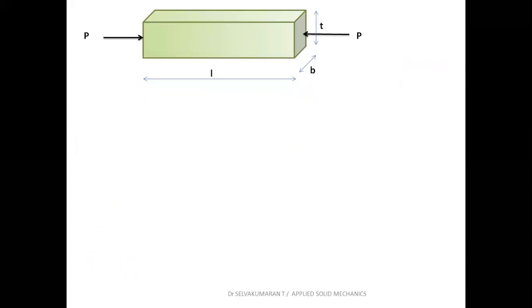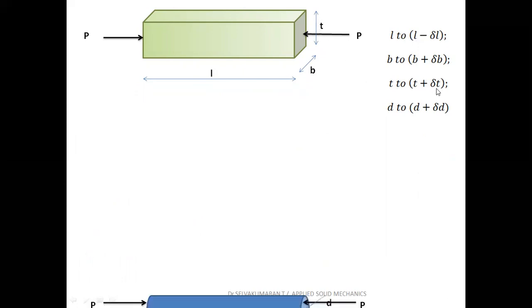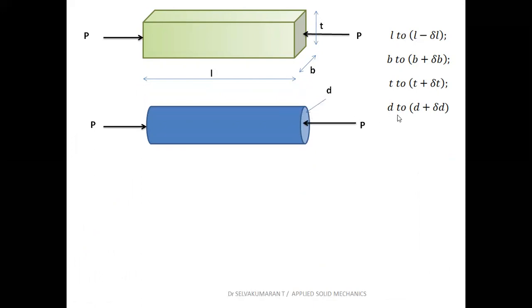Now, when an axial compressive load is applied, L decreases to L minus delta L, while B increases to B plus delta B and T increases to T plus delta T. For the cylindrical rod, diameter D increases from D to D plus delta D. Here delta L is the change in length, delta B the change in breadth, delta T the change in thickness, and delta D the change in diameter. So delta L by L is the linear strain, and delta B by B, delta T by T, delta D by D are lateral strains.